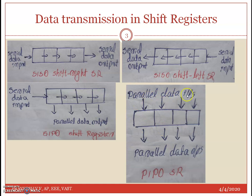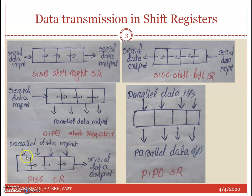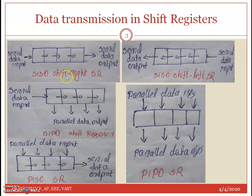In the third classification, you have parallel inputs and parallel outputs. The data bits are entered simultaneously and also taken out simultaneously — this is called PIPO, Parallel In Parallel Out shift register. The last classification is Parallel In Serial Out — where the input is parallel and the output is serial. So the four classifications are: SISO (serial in, serial out), SIPO (serial in, parallel out), PIPO (parallel in, parallel out), and PISO (parallel in, serial out).